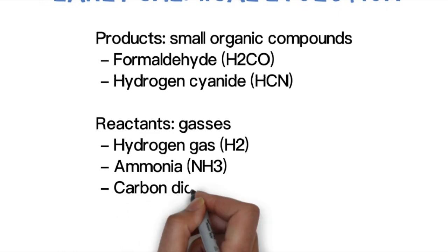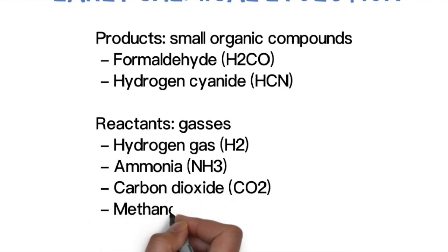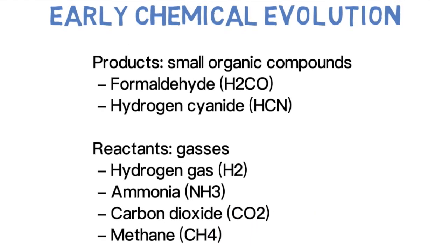These were the gases that Miller was going to introduce into his experiment to try to react with one another to produce simple organic molecules such as formaldehyde and hydrogen cyanide: hydrogen gas, ammonia, carbon dioxide, and methane.